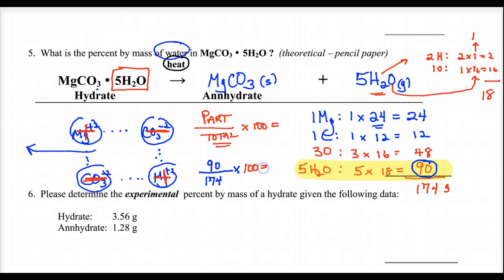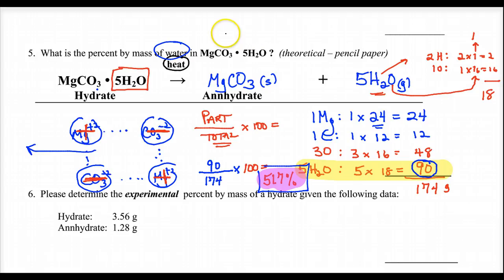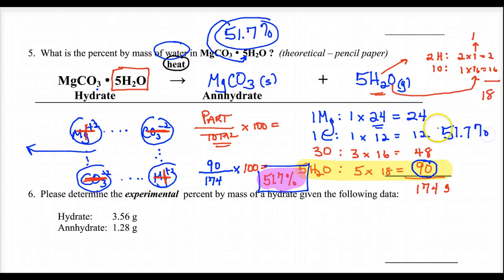So 90 divided by 174 times 100 gives 51.7%. That means 51.7% of the entire mass of this hydrate is due to the water. That is the answer to the problem.